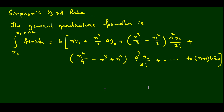This is our general quadrature formula. It is the integration from x-naught to x-naught plus n·h of f(x) dx, equals h into n·y₀ plus n²/2 · Δy₀ plus (n³/3 minus n²/2) · Δ²y₀ / 2! and so on, up to n+1 terms.